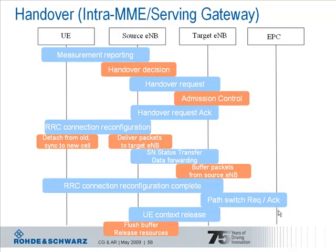The UE can then detach from the source cell and synchronize to the target cell. On the base station side, data packets and sequence number information can be forwarded from the source to the target base station again over the X2 interface. And the target can buffer the new packets. As soon as the UE is connected to the target base station the RRC connection reconfiguration procedure is complete.